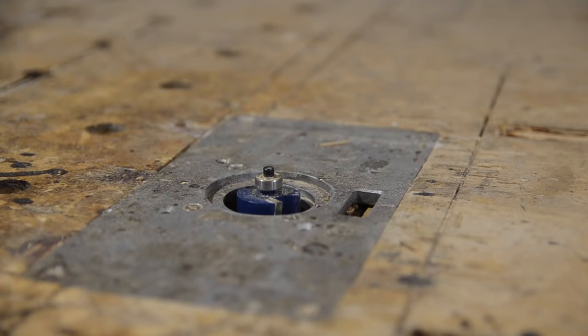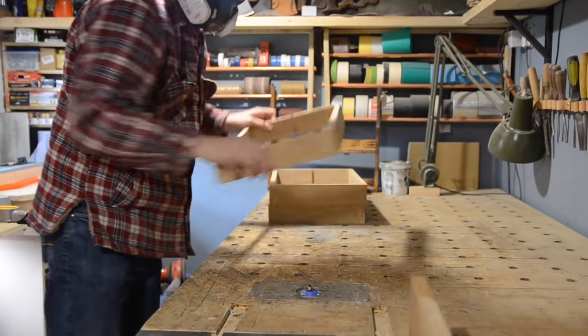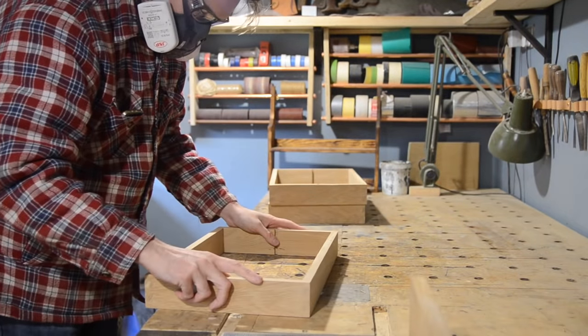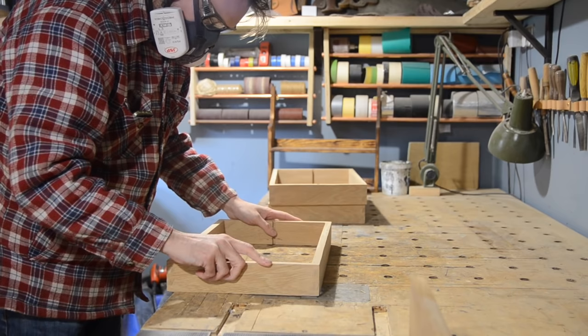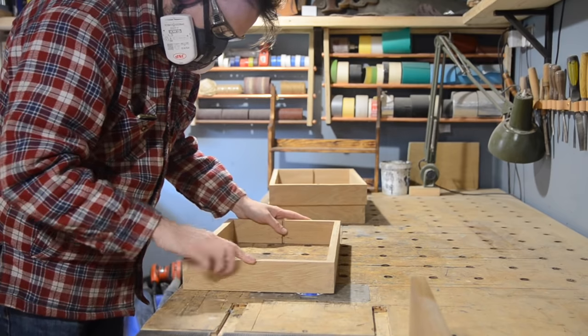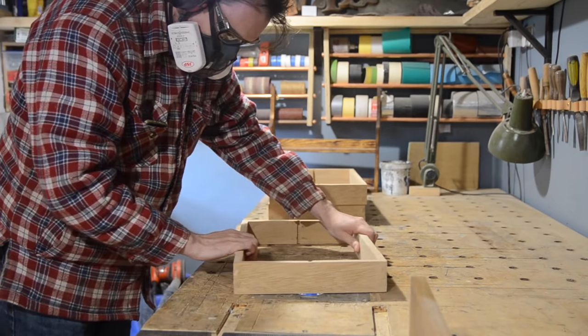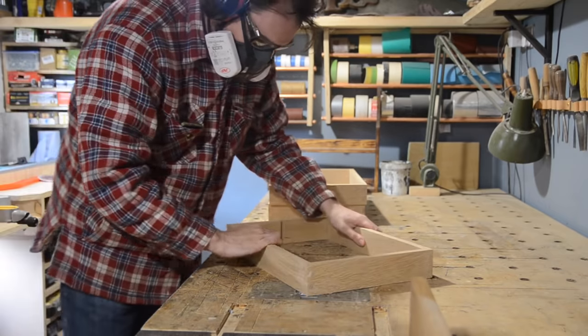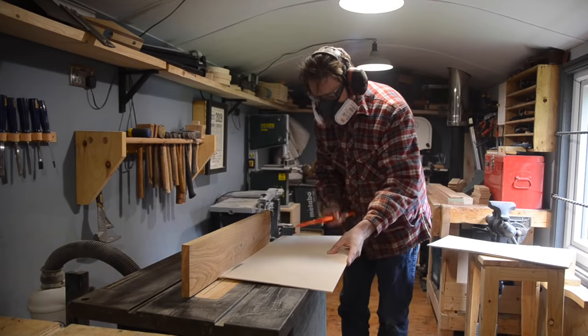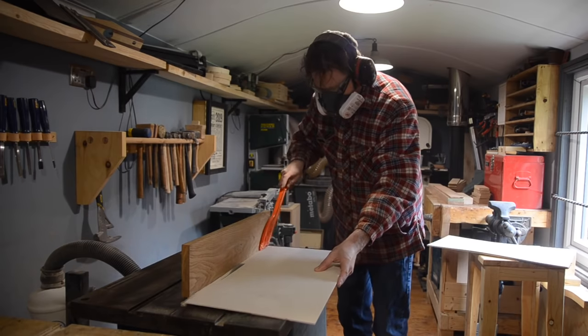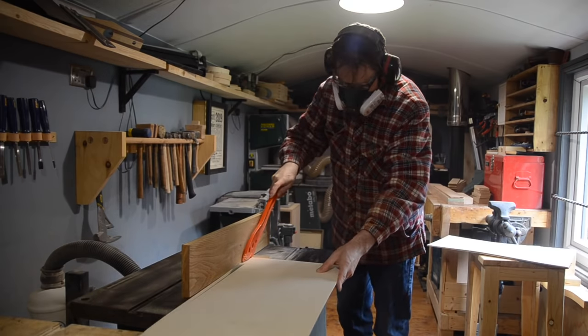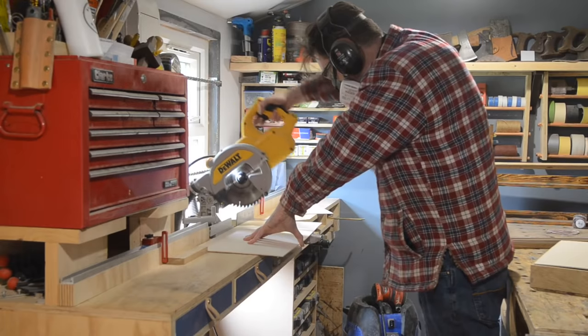I want this to have a rebate to accept a back panel. I raise a bearing guided router bit a very small amount and take a shallow pass. I do this three times until I've built up to a three millimeter deep rebate. And this is to accept some birch 3mm ply. So I can get that cut down to fit inside.